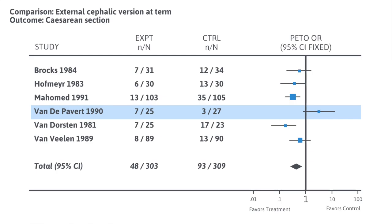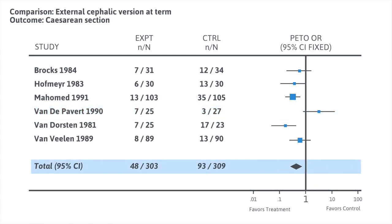At the very bottom, the black diamond is called the summary evaluation and summarizes all of the evidence. In the experimental group, 303 women underwent external cephalic version and 48 ended up with a cesarean section. In comparison, 309 women did not undergo external cephalic version and 93 had a cesarean section. The overall results favored the treatment, as the black diamond and both its ends are to the left of the center line.